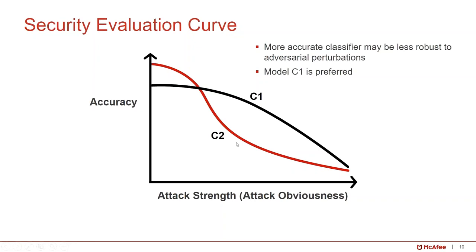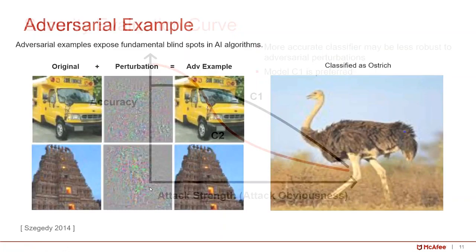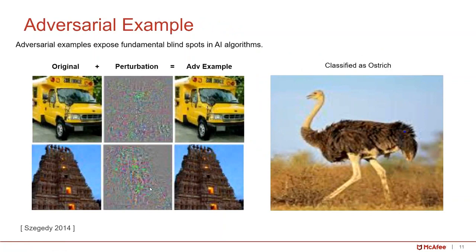In addition to measuring accuracy, we also measure the robustness of the system. The key concept in today's talk is evasion attack, and the key concept of evasion attack is the adversarial example. Adversarial examples expose the fundamental blind spots in AI algorithms.